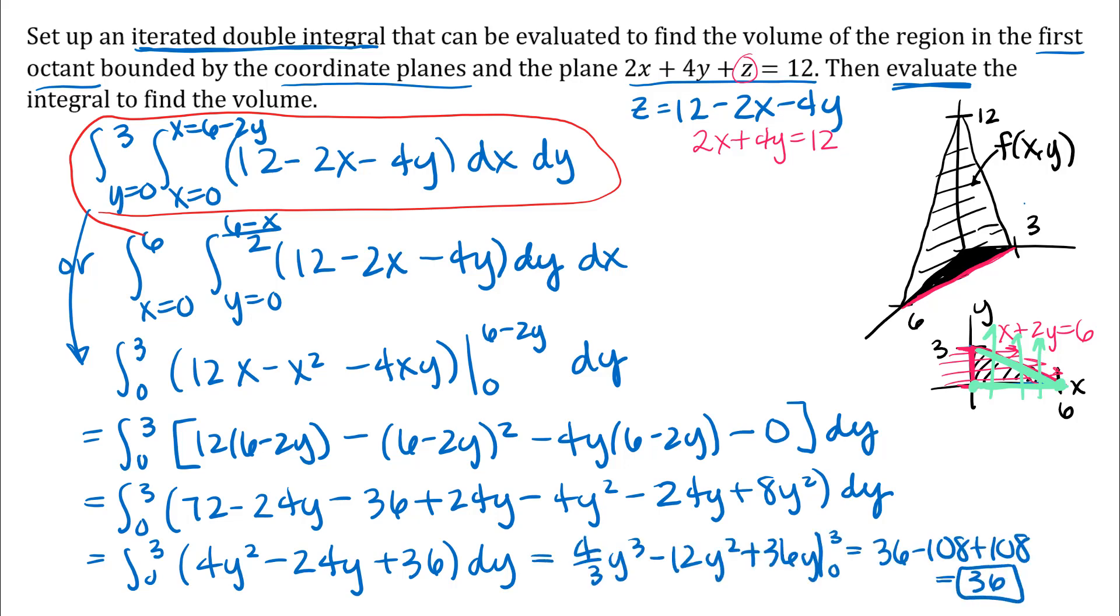I got 36 for my answer - that represents the volume of that region. You might notice you don't actually need an integral to find the volume of this region. If you remember a formula from geometry, this shape is really a pyramid. The formula for the volume of any pyramid or cone is one-third times the area of the base times the height. We can use that to check our answer.